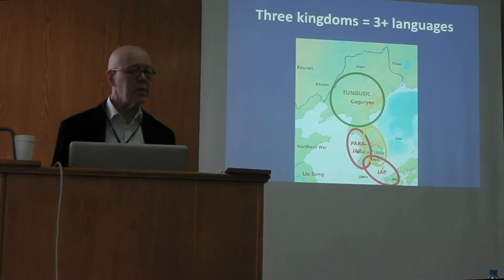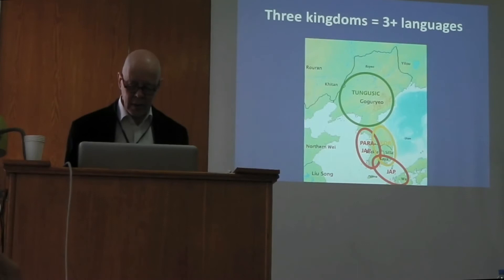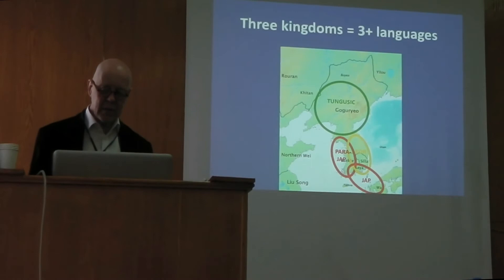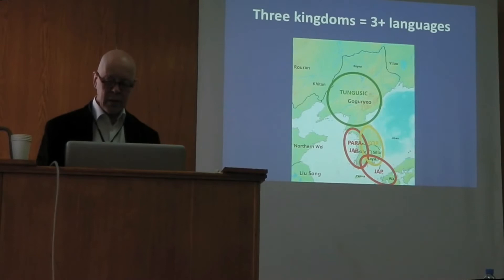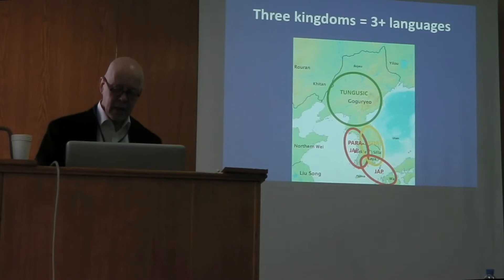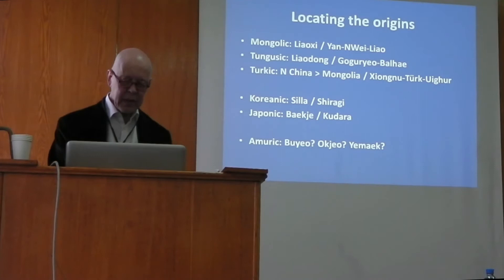When you look at the modern distribution of languages and other information, we can ultimately get a rather good idea of what languages were spoken where. About 2,000 years ago, Korea was divided into three kingdoms, and we may argue that these kingdoms had different languages — probably the northern kingdom, Goguryeo, was dominant in Tungusic speaking, while the southeastern kingdom, Silla, which expanded political power over all of Korea, was Korean speaking. We had the continental homeland of Japan in the southwestern part of Korea, which was the Baekje kingdom.